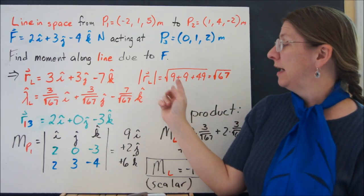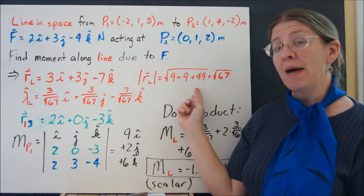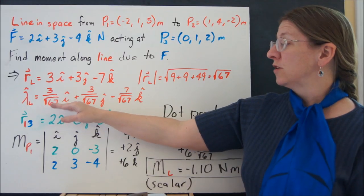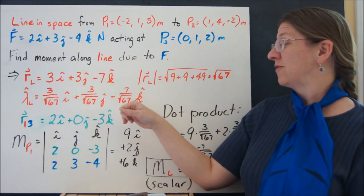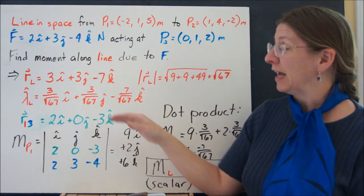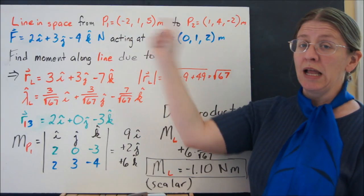The unit vector along that line is found by dividing by the magnitude. So my unit vector is 3 over root 67 i plus 3 over root 67 j minus 7 over root 67 k. That's the unit vector along this red line.